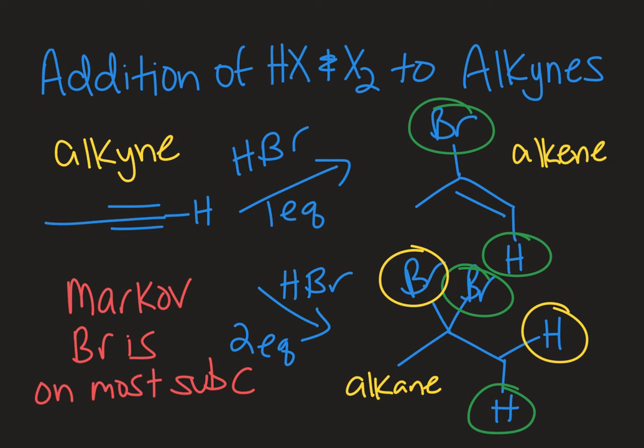And then if we think about what we're doing functional group-wise, we're starting out with an alkyne. If I add one equivalent, I have a double bond, so we could characterize this as an alkene. And then if I had two equivalents, I've gotten rid of all of my pi bonds, and so this base chain is an alkane. I have halogens on there now. So one equivalent, one HBr; two equivalents, two H's, two Br's, and then I see the same type of addition, Markovnikov, that I would see in an addition across an alkene.